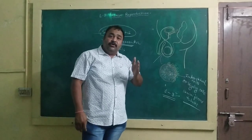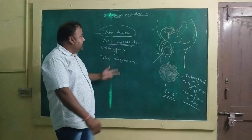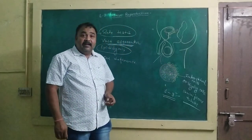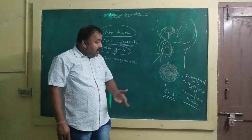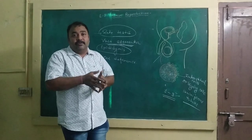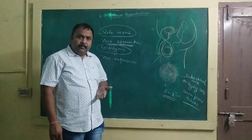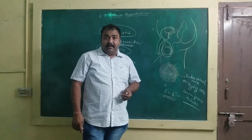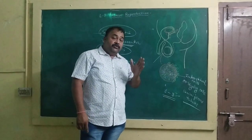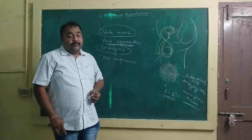Vasa efferentia are small, hair-like, thin ducts that transfer sperms to the epididymis. The epididymis is a long, highly coiled and convoluted duct attached closely to the outermost surface of the testis. Its highly coiled nature ensures that sperms passing through it receive proper time for maturation and development.